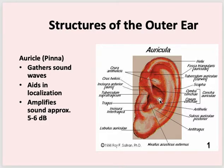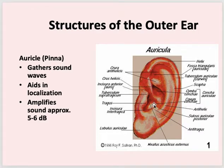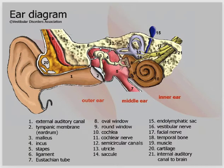The concha is divided into two parts. There is the scapha, the tuberculum, the auricular fossa, the triangular fossa, and the antitragus — the cartilage opposite to the tragus. Similarly, antihelix is opposite to the helix. Together these structures are called the pinna. The outer ear consists of the pinna, the external auditory canal, and the lateral surface of the tympanic membrane.